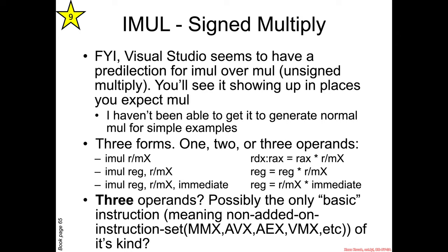The first one is IMUL, or signed multiply. Visual Studio seems to really like signed multiply over unsigned multiply, which is just MUL. Even if you're using all unsigned values, it'll still prefer IMUL over MUL. This is actually a way you can infer that code was generated with this particular compiler.